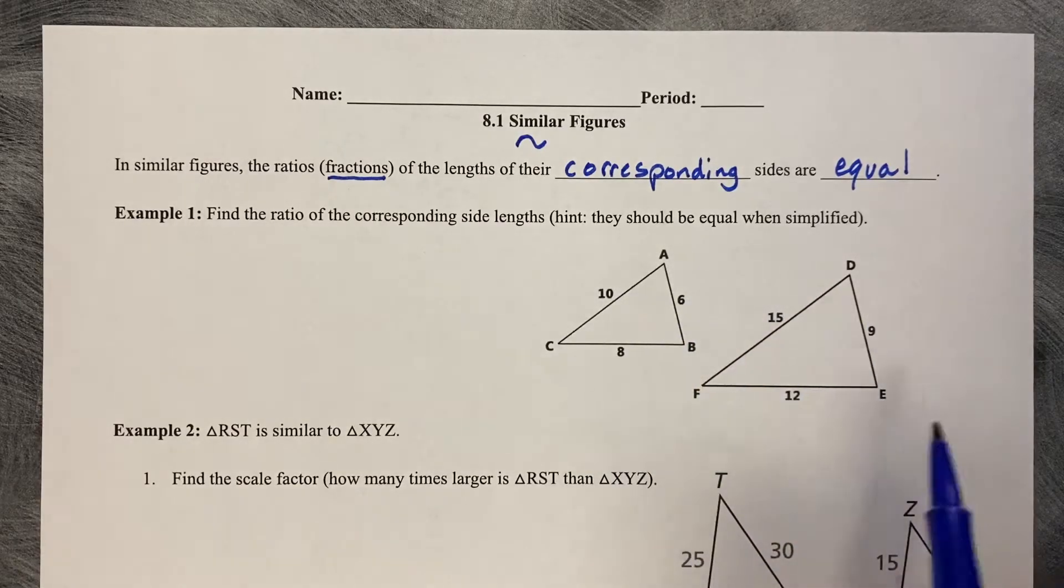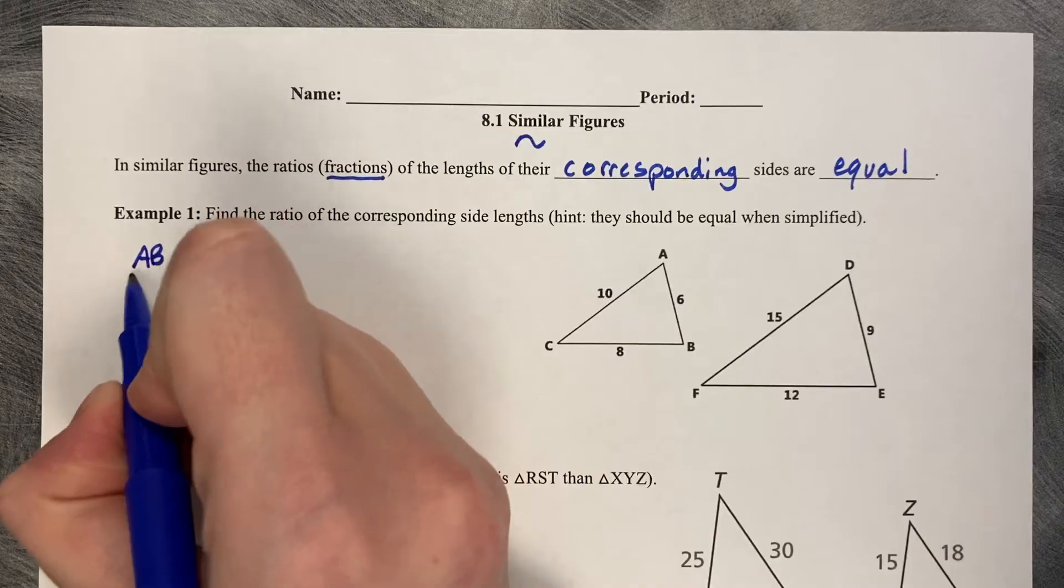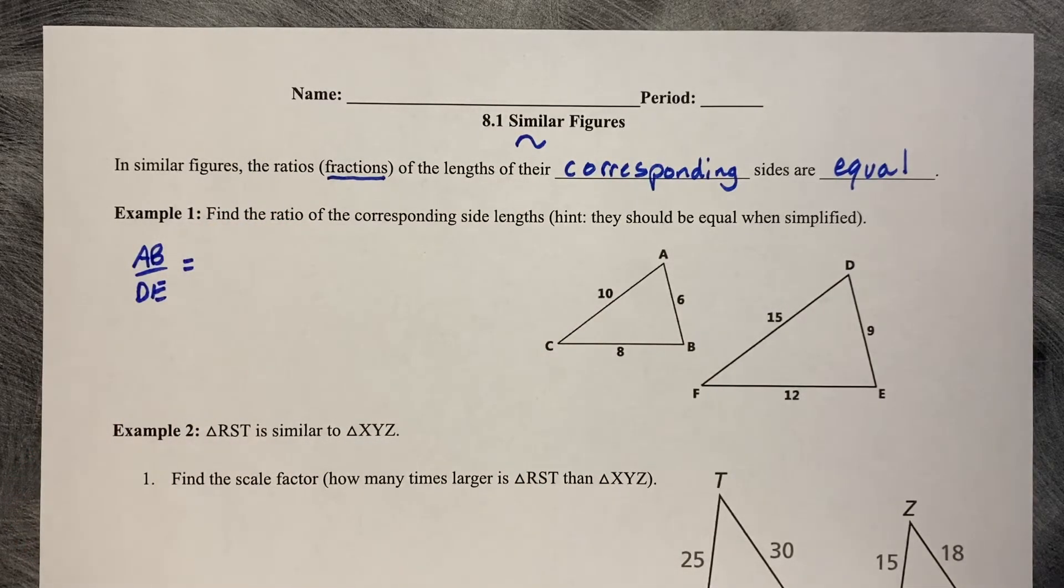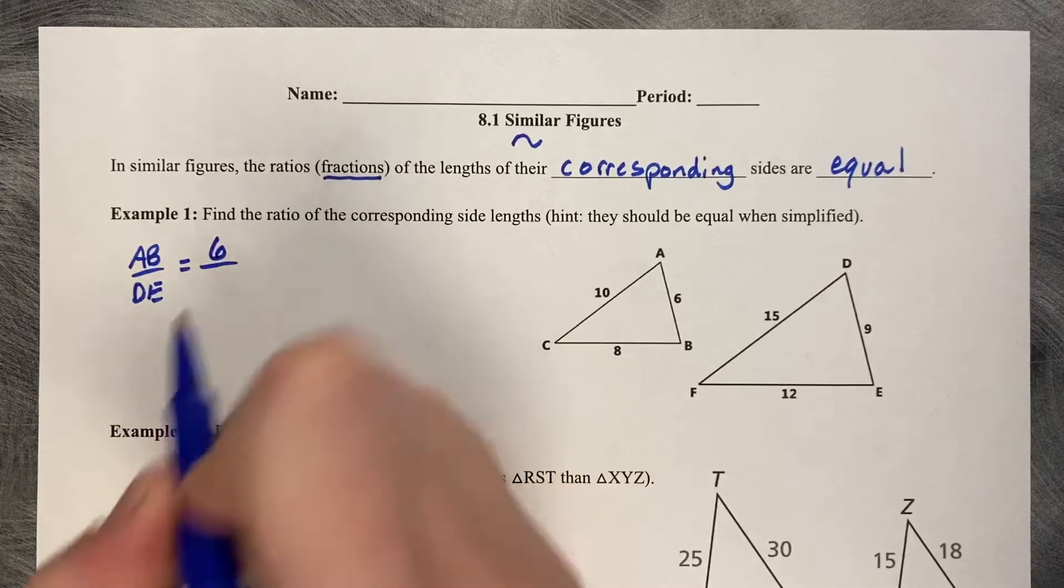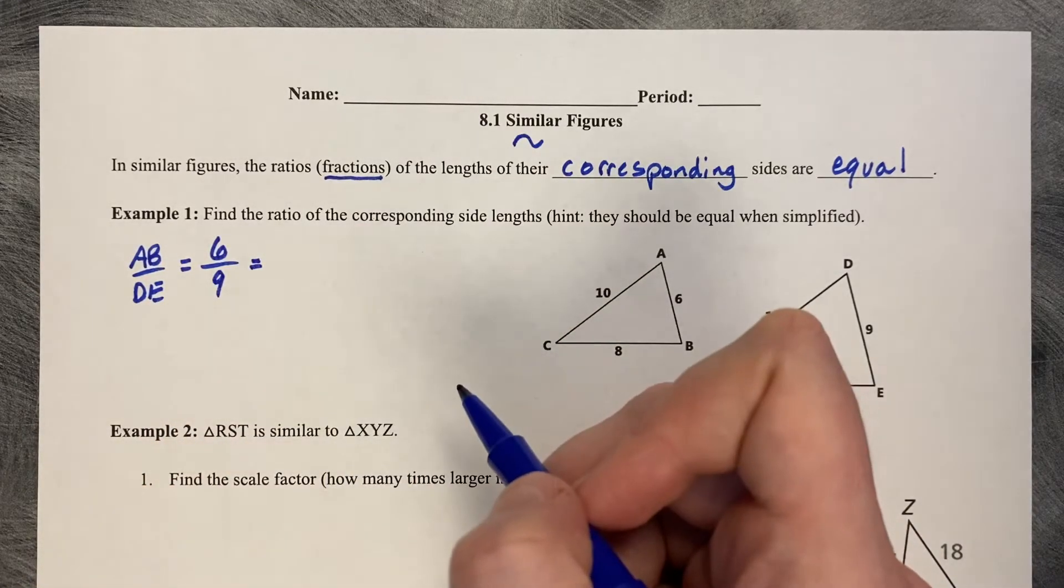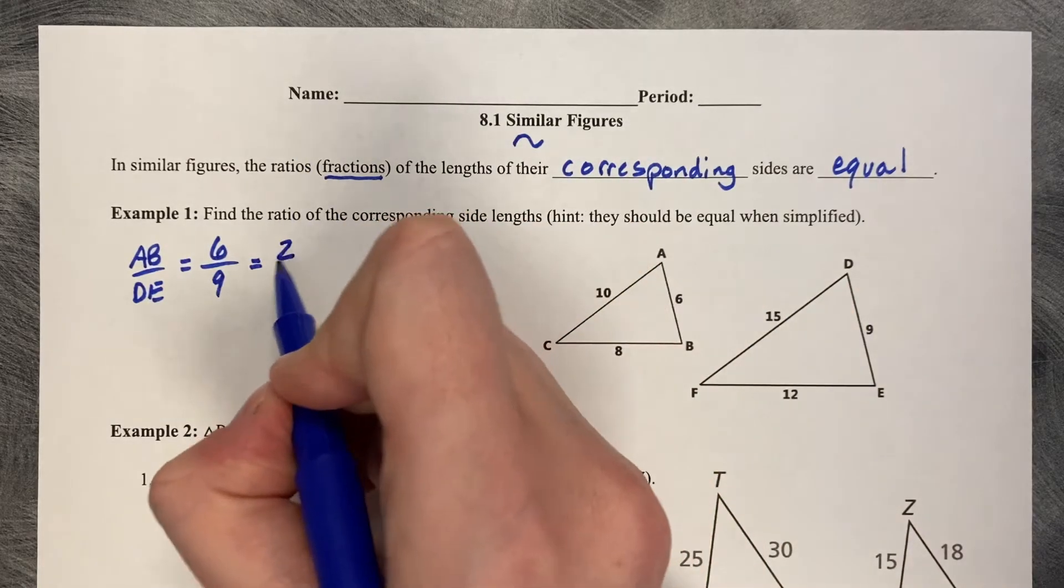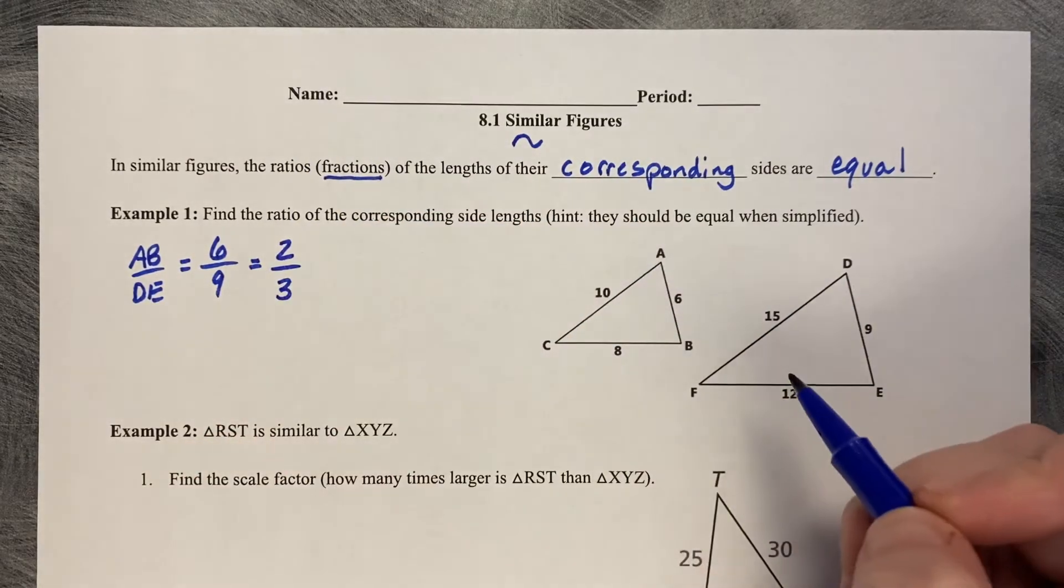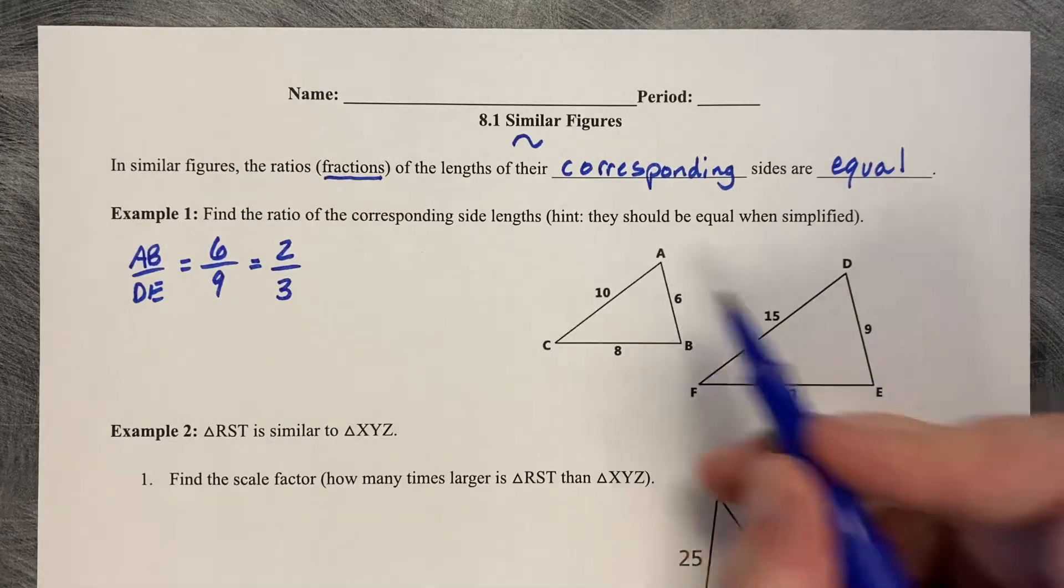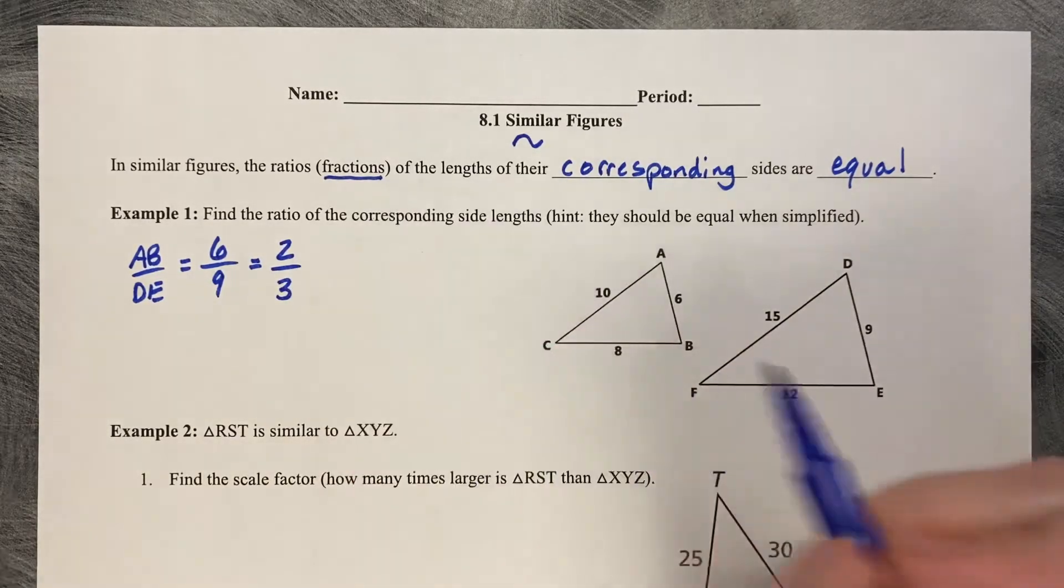Let's start with AB and DE. If we compare AB to DE, AB is 6, DE is 9. Those both divide by 3. 6 divided by 3 is 2, 9 divided by 3 is 3. So we can see that there is a reduction from the larger one to the smaller one by a factor of 2 thirds.